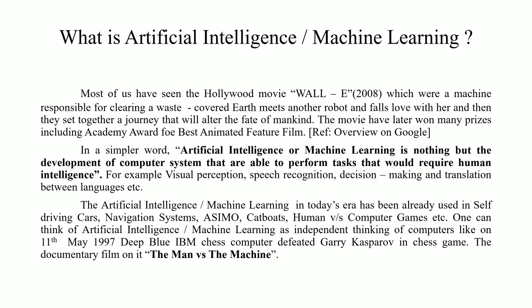The movie won many prizes including Academy Awards for the best animated feature film. In simpler words, artificial intelligence or machine learning is nothing but the development of computer systems that are able to perform tasks that would require human intelligence — for example, visual perception, speech recognition, decision making, and translation between languages.